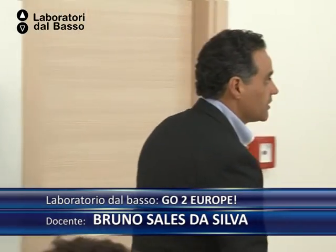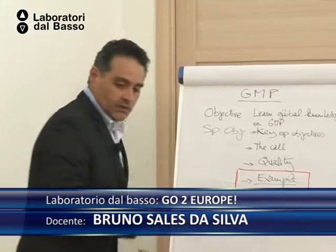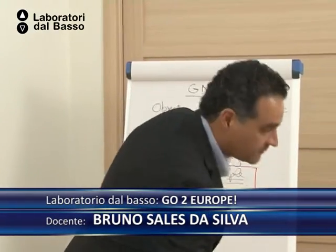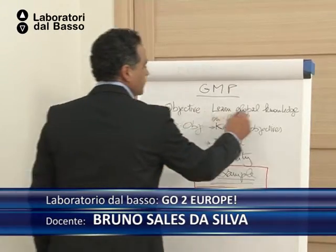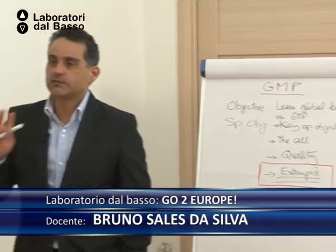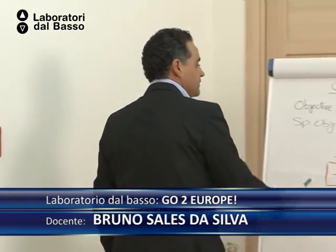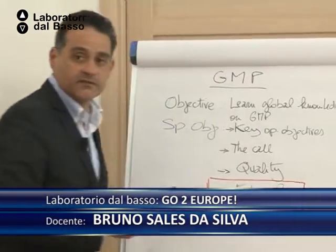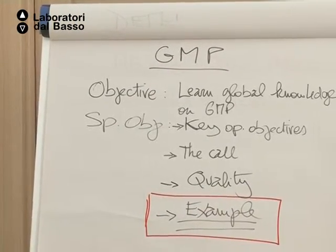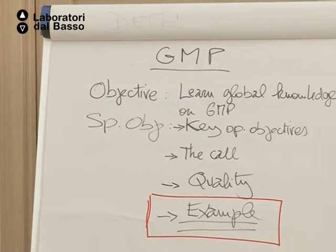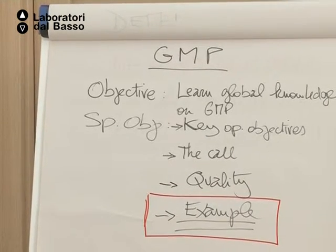You will have the chance — and I think this is very important — to check this information in Italian, because there are versions in Italian available on the internet. The objective of this module is basically to learn and have a global knowledge on the Grundvig multilateral project globally, and more specifically to understand the key operational objectives. Operational objectives is something practical.